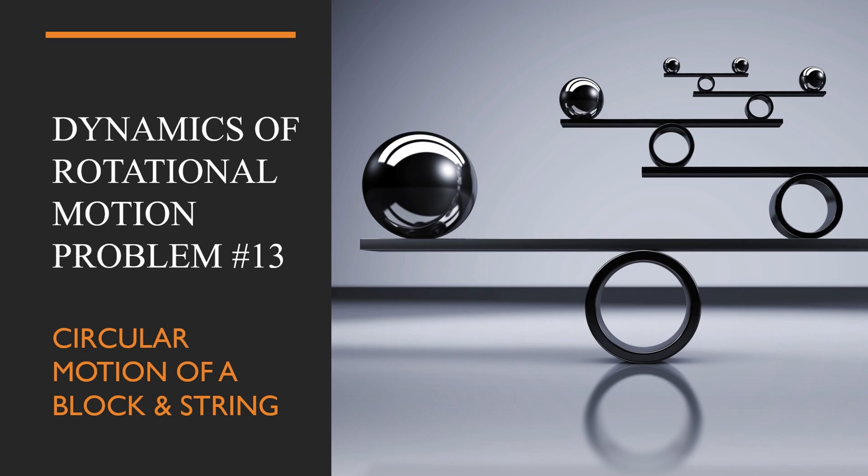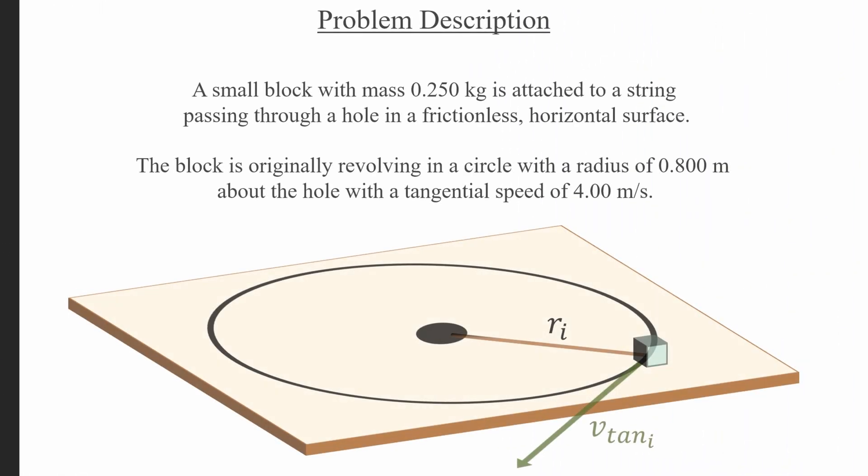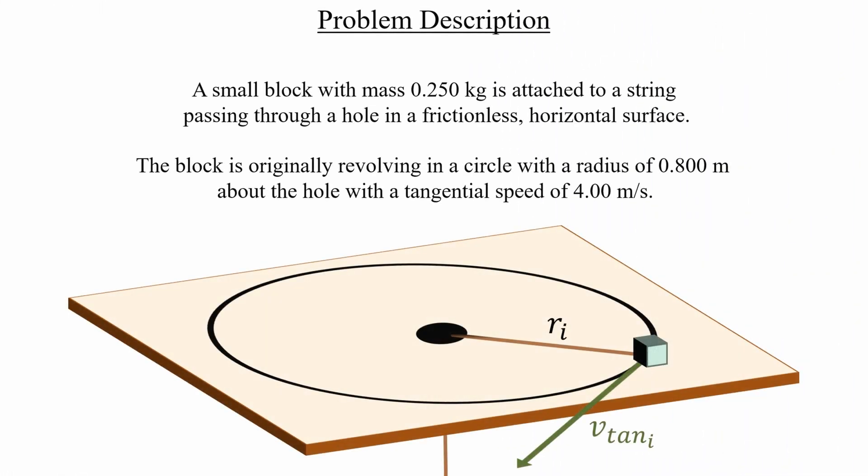Hey there folks. Good morning. In today's video, we have this block that's tied to a string, and it's moving around in a circle on a horizontal surface with no friction. Here I've labeled the initial radius of the circle and the block's initial tangential speed.